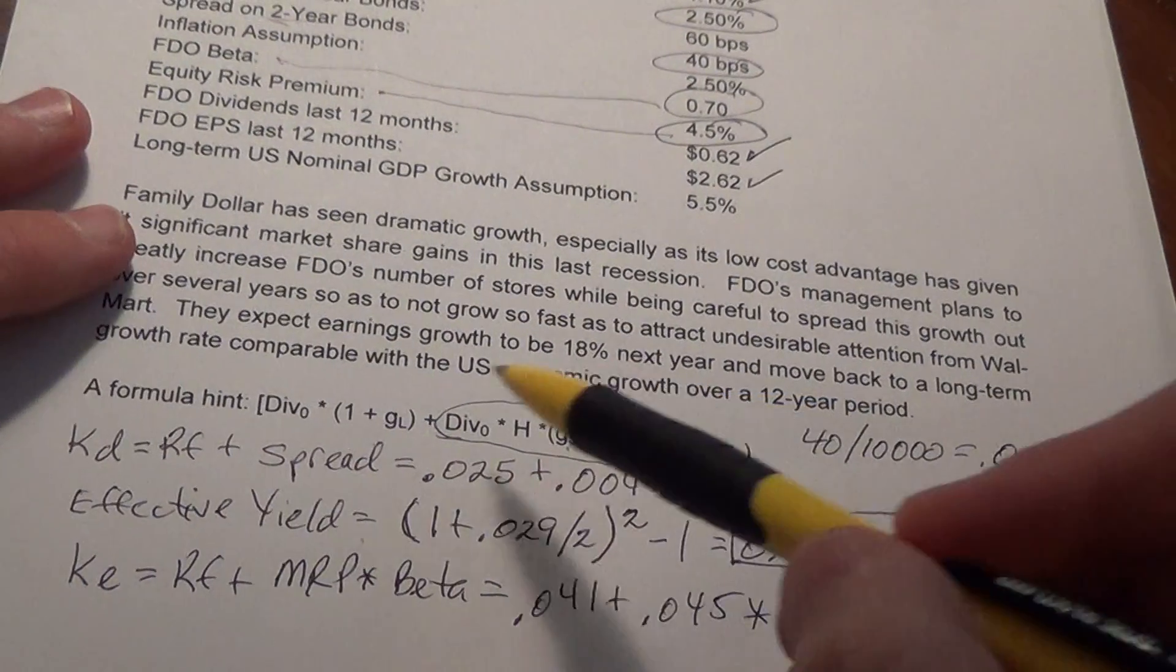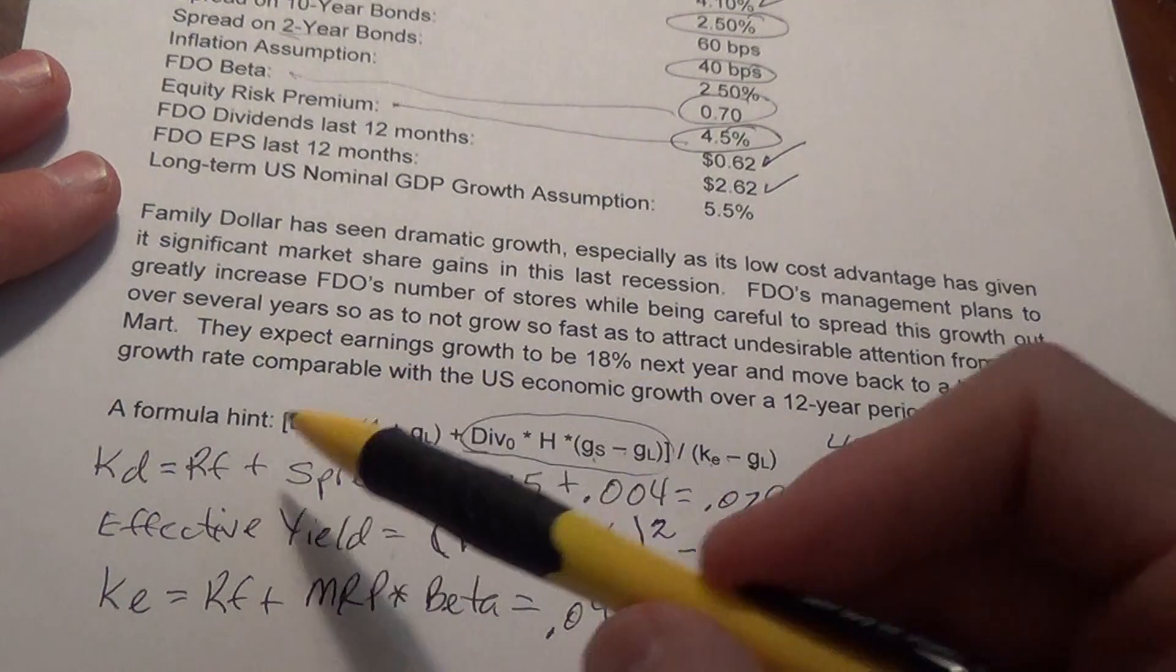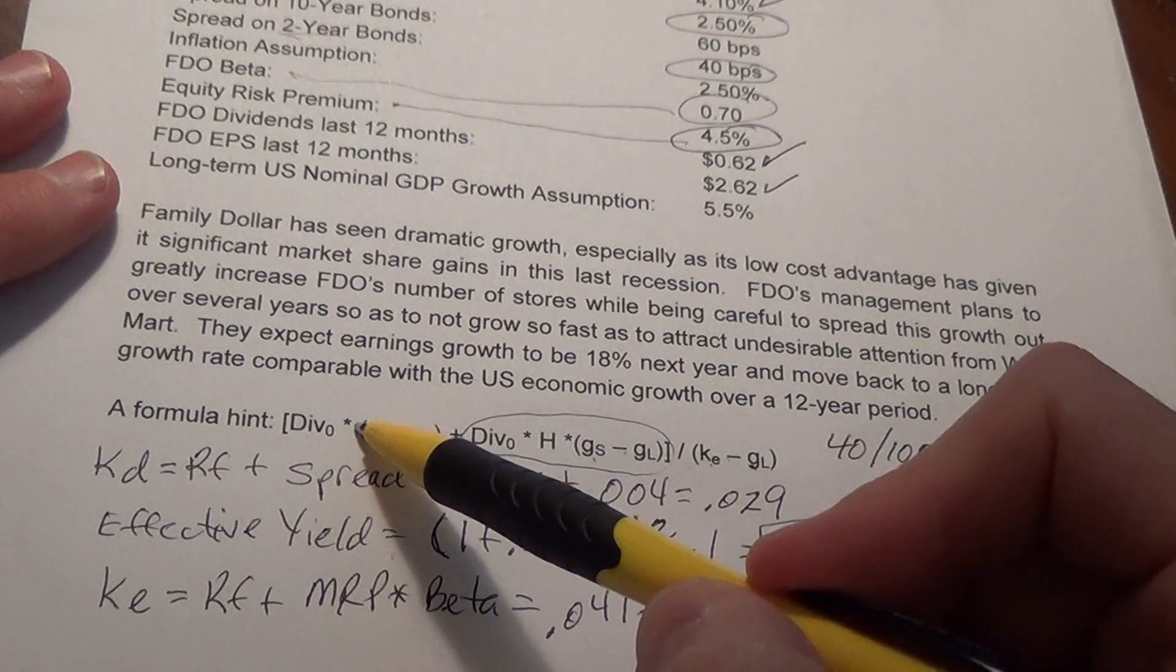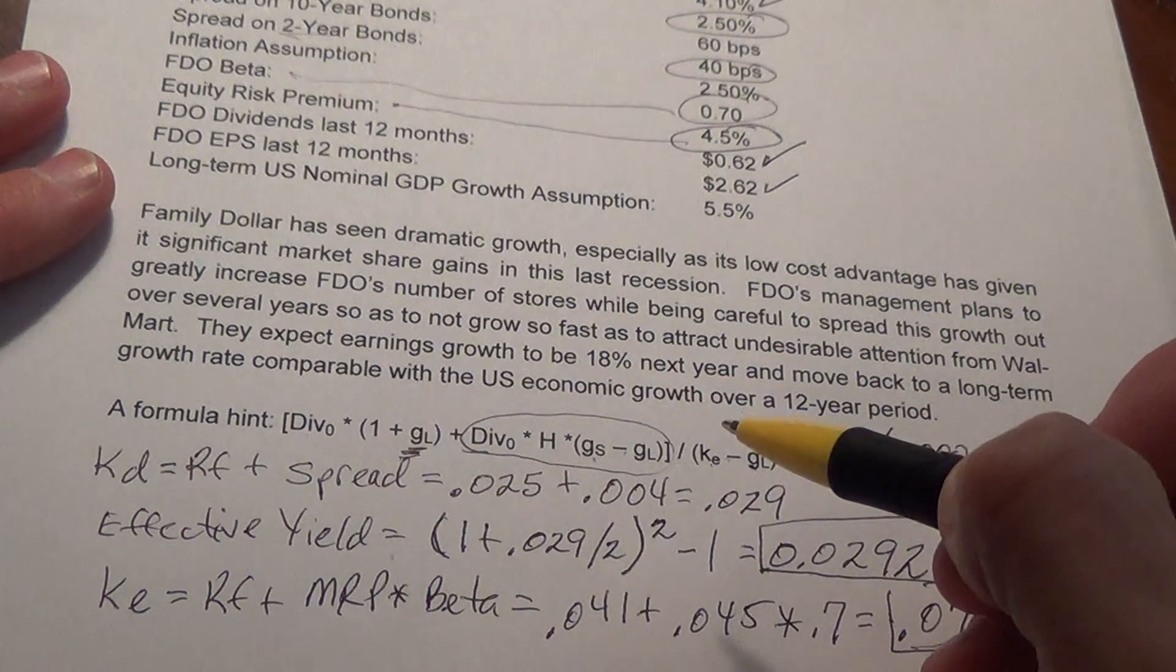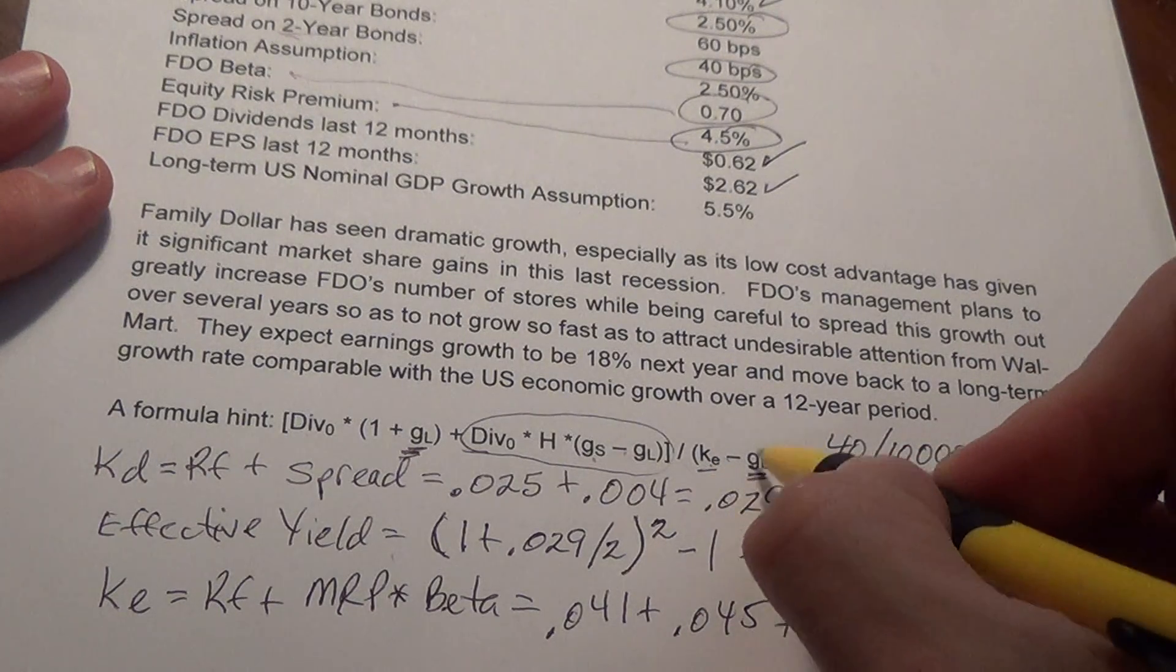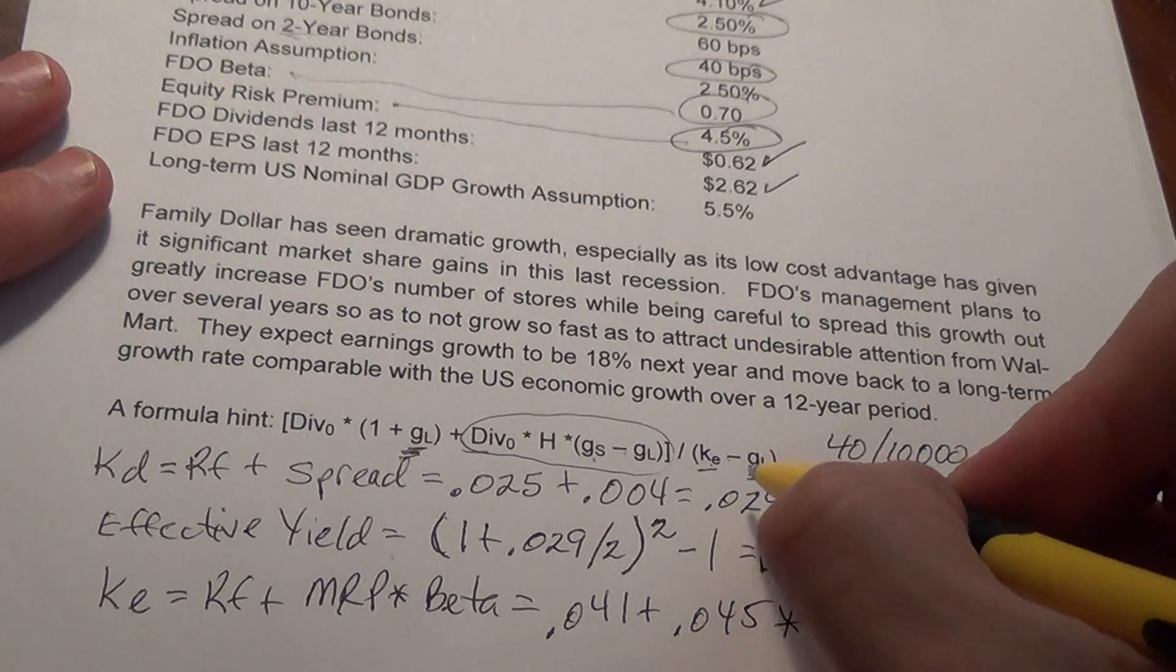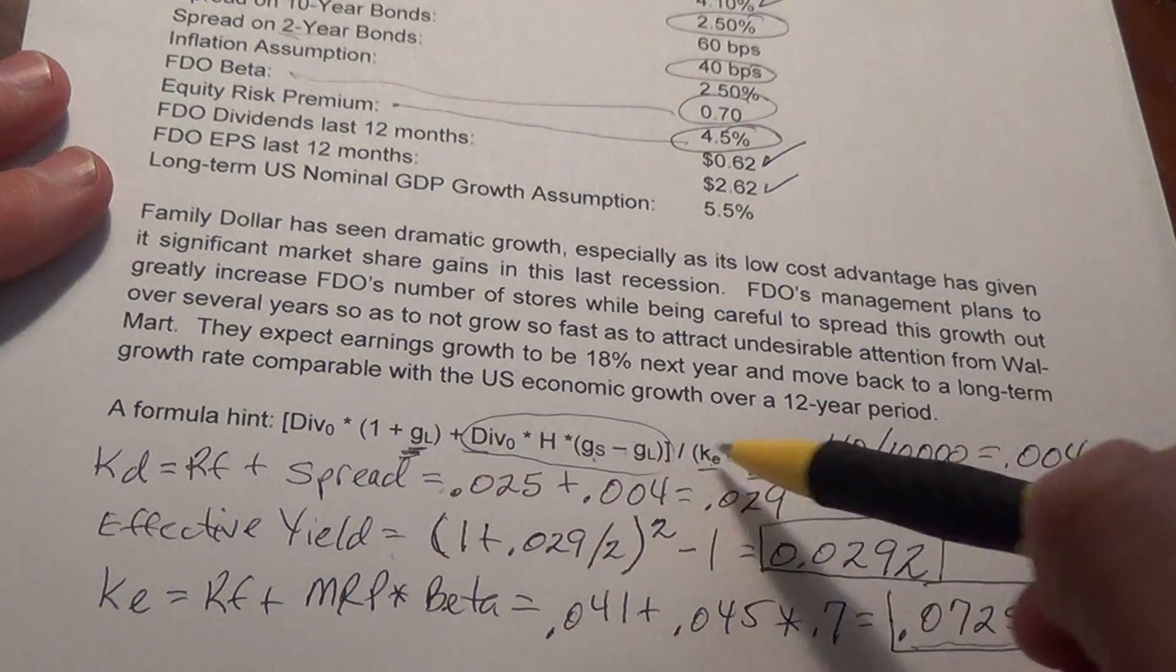The capitalized earnings model is very similar. It looks exactly like the constant growth model except it's your earnings per share times one plus your growth rate, and your growth rate in the capitalized earnings case is the inflation rate. You divide that by KE minus the growth rate, which is inflation. So you really have all three formulas hinted at here, but this is the H model formula.